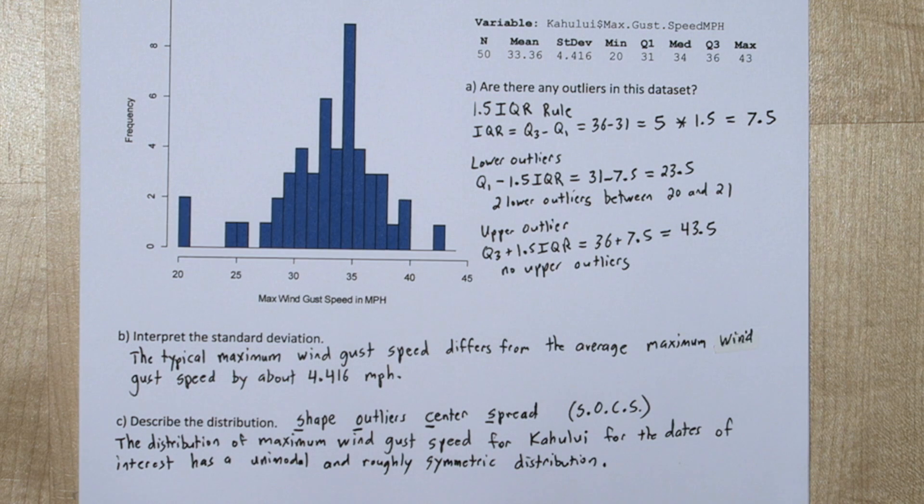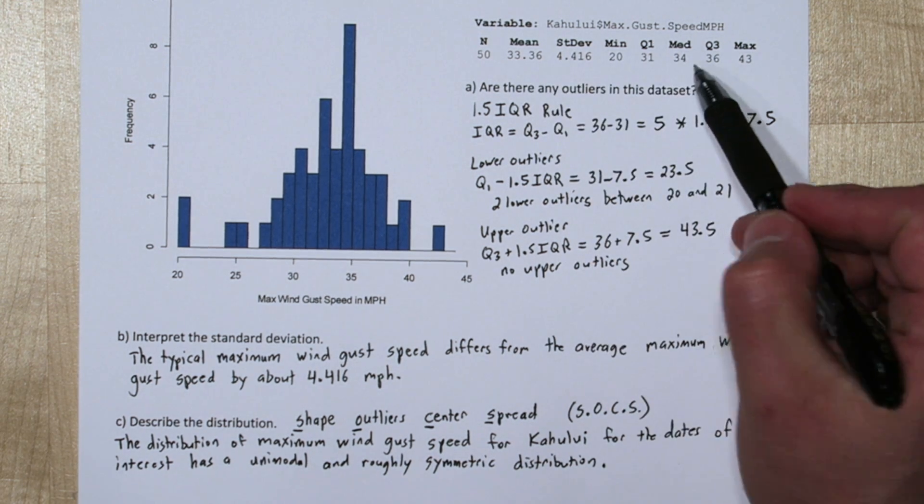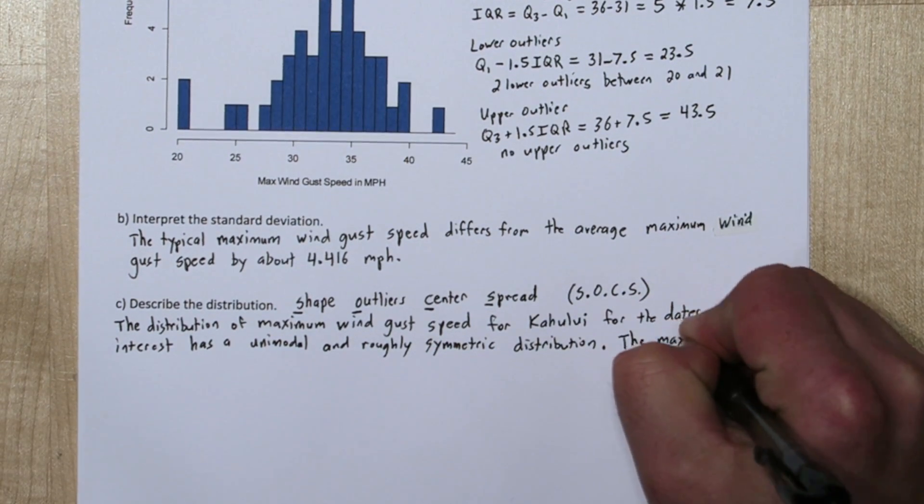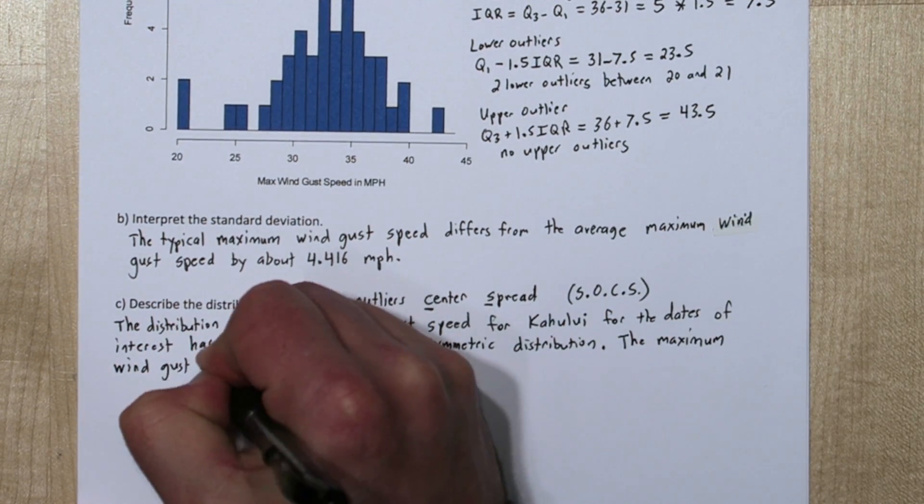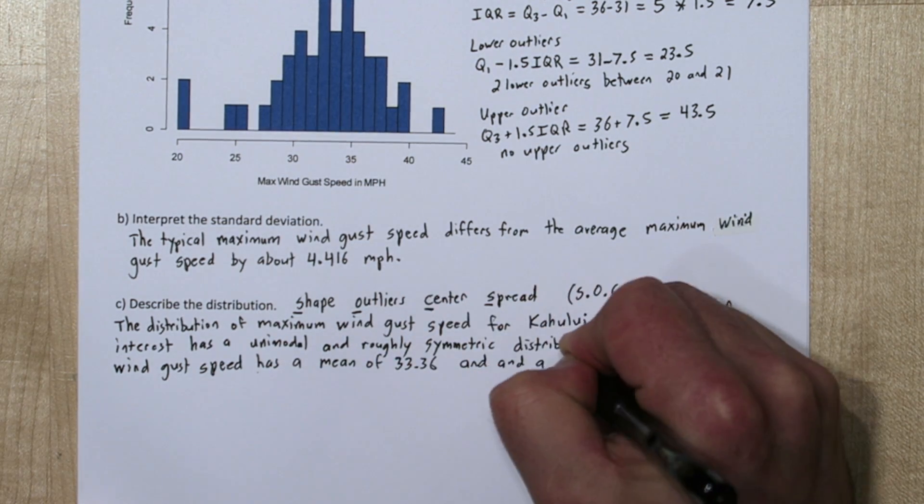Next, let's describe the center. From the computer output we have two measures of center, the mean and the median. So let's report both of those. We can say the maximum wind gust speed has a mean of 33.36 and a median of 34 mph.